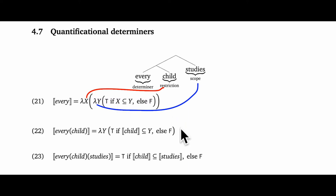In 22, we start to reveal the composition more deeply. If every combines with child, then we get a function that, given an input set y, will return true if the set of children is contained in the set y, otherwise false. When studies comes in, as in 23, there are no more lambdas, no more arguments to worry about, and we're assessing directly whether the set of children is contained in the set of entities that study.